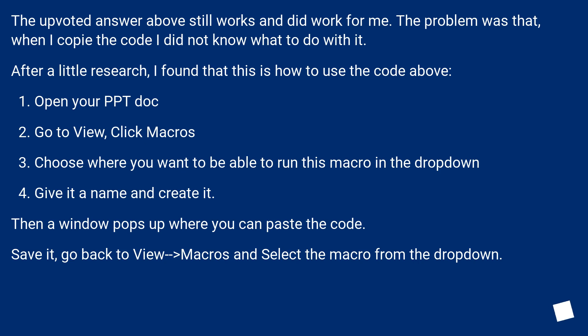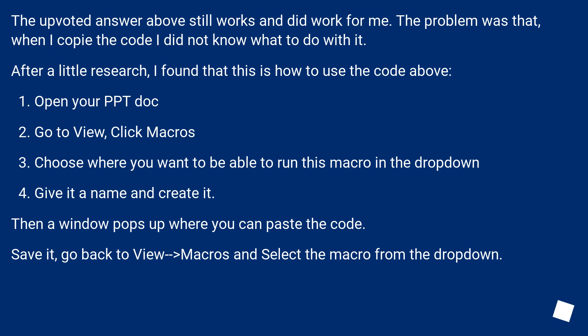Open your PPT document. Go to View, click Macros. Choose where you want to be able to run this macro in the dropdown. Give it a name and create it. Then a window pops up where you can paste the code. Save it, go back to View, then Macros and select the macro from the dropdown. Click Run and done.